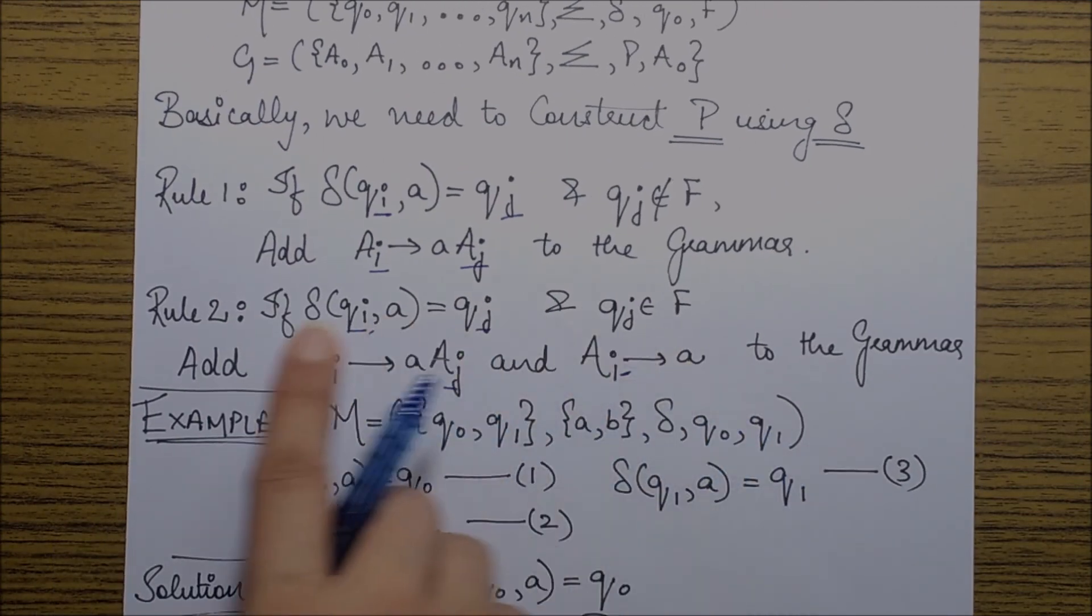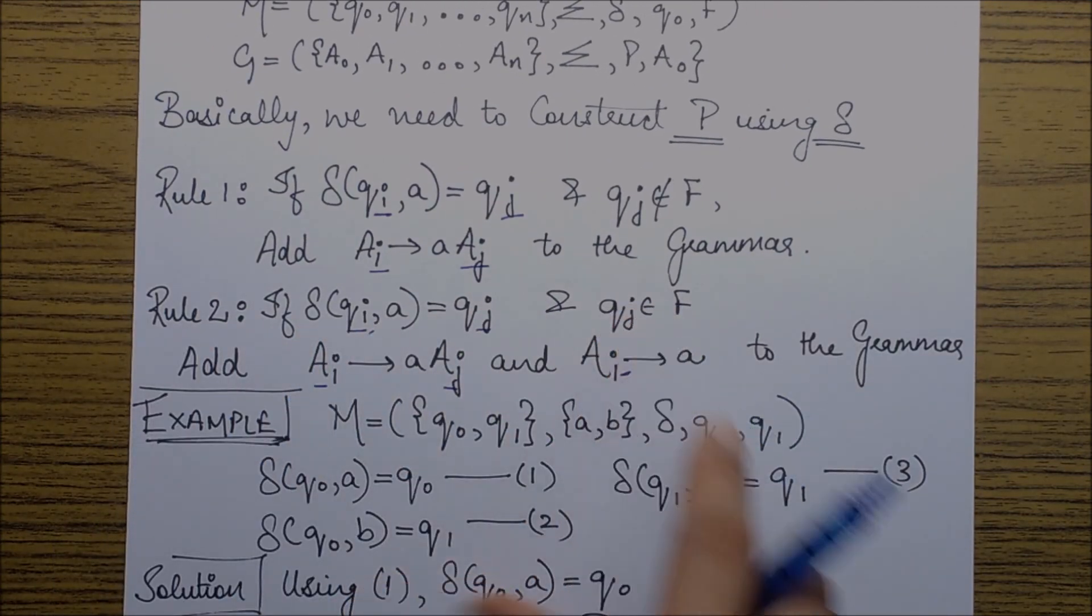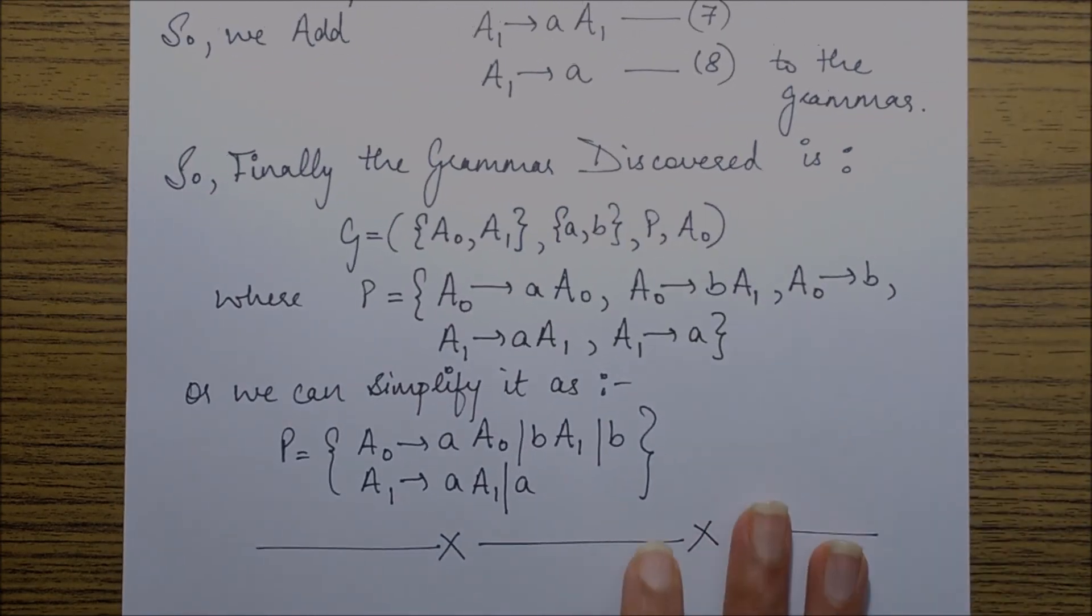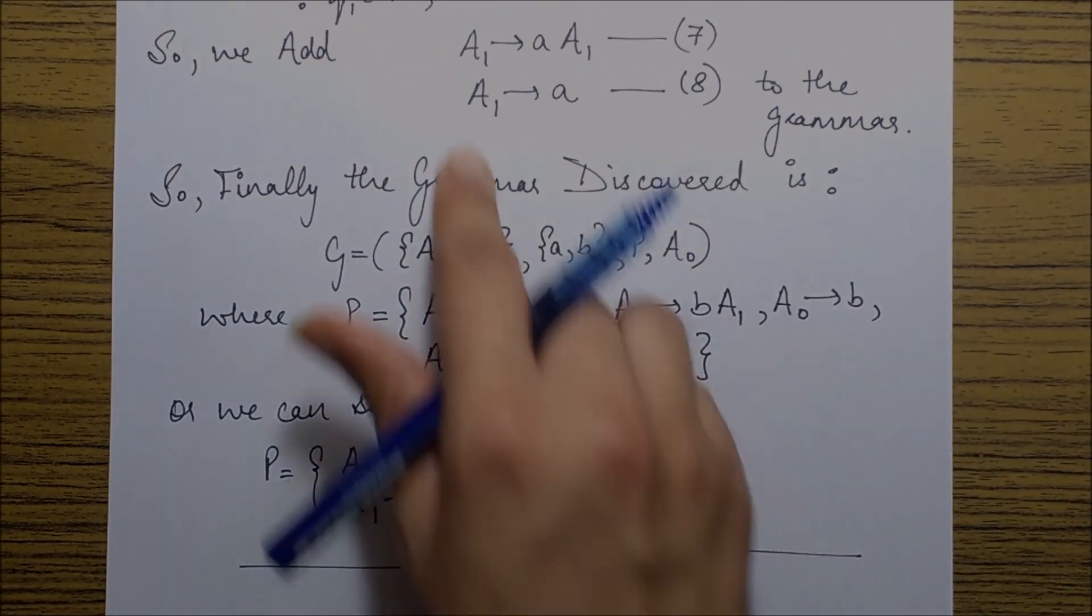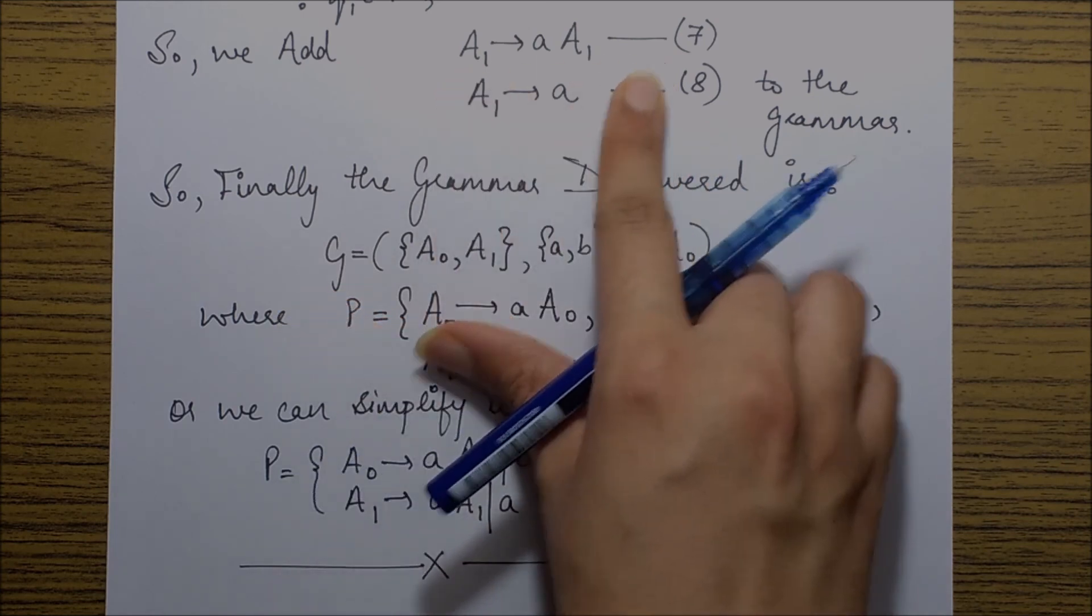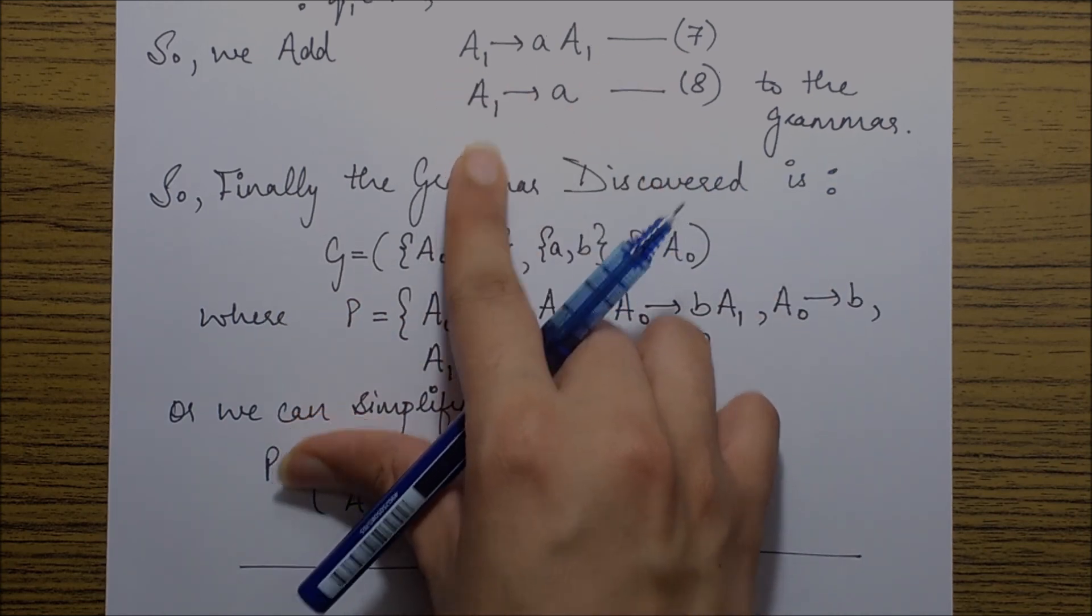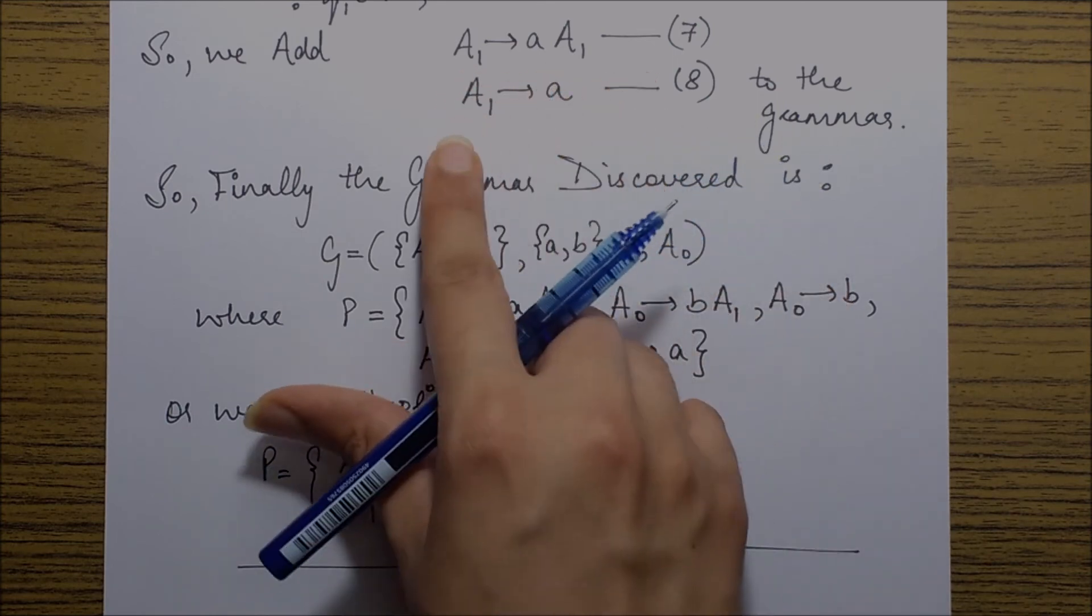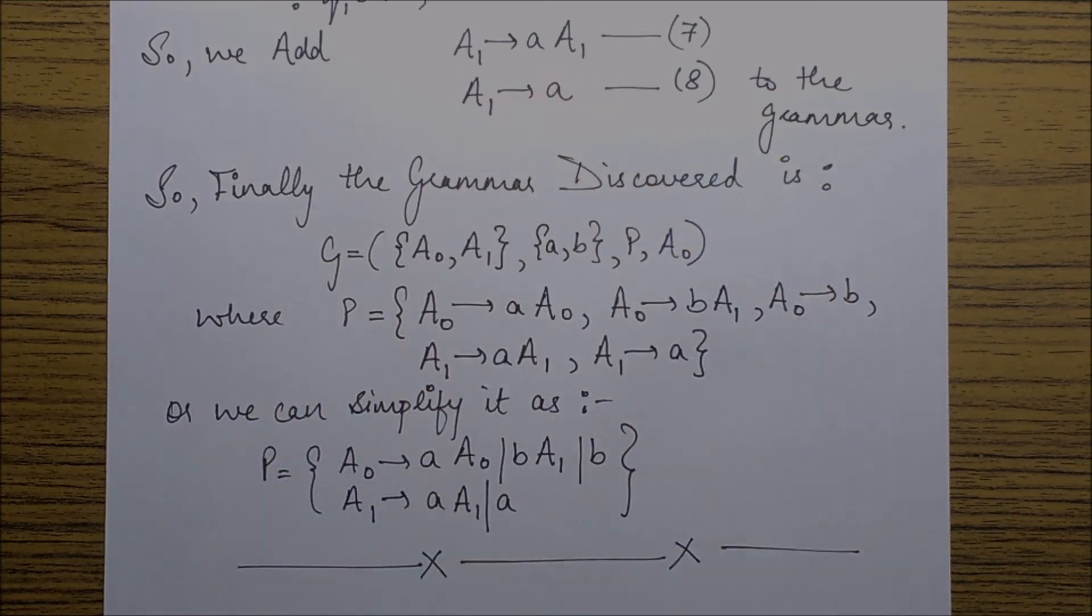So again applying the same rules we'll get the productions as A1 goes to aA1 and A1 goes to small a. So finally we have...